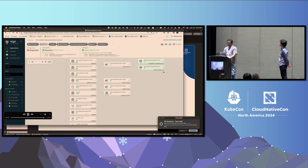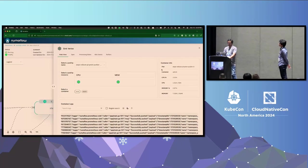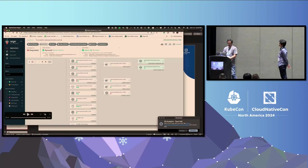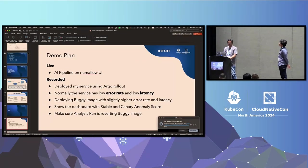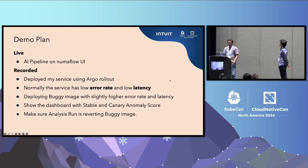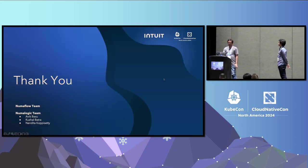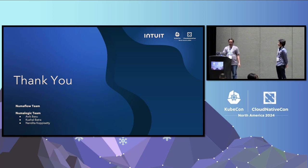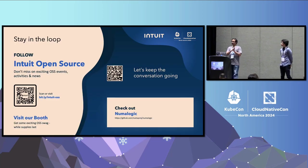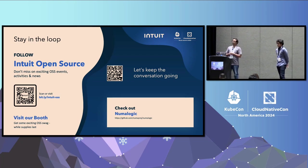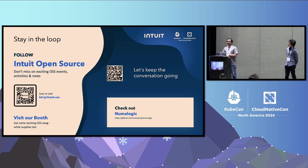That's all for the demo. I'm from the NumaFlow and PneumoLogic teams, as is Avik. All the models and pipelines are open source — you can go to the NumaFlow GitHub repo and find all the pipelines and models. You can deploy them into your cluster and they will run out of the box with Argo Rollouts. Any questions?